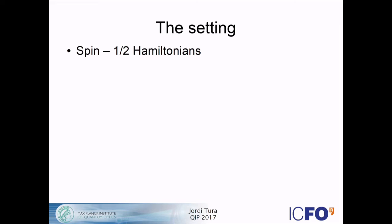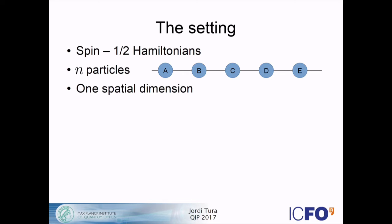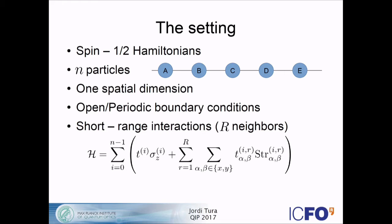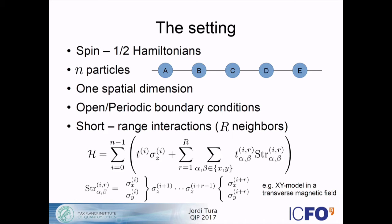The setting is the following. I'm going to consider spin one-half Hamiltonians with N parties in one spatial dimension — a spin chain — with open or periodic boundary conditions and short-range interactions up to capital R neighbors. These would be real number coefficients, the sigma would be Pauli matrices, and there are some string operators with sigma-x or sigma-y at the end and a chunk of sigma-z in the middle. An example of this class of Hamiltonians would be an XY model in a transverse magnetic field. I consider this kind because it's easy to compute their ground state energy.